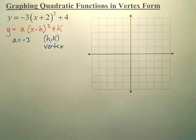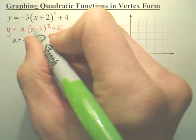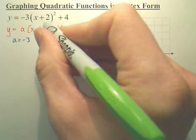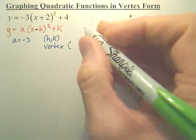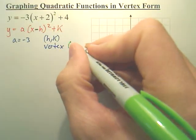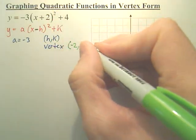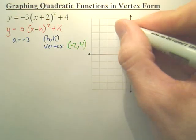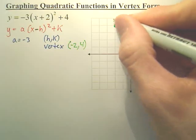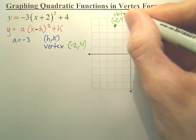So for this particular problem, your vertex, well, see this negative right here? That means opposite of. This means normal. So your vertex is actually going to be the opposite of 2, which would be negative 2, 4. So negative 2, 1, 2, and up 4. Negative 2, 4, that is my vertex.